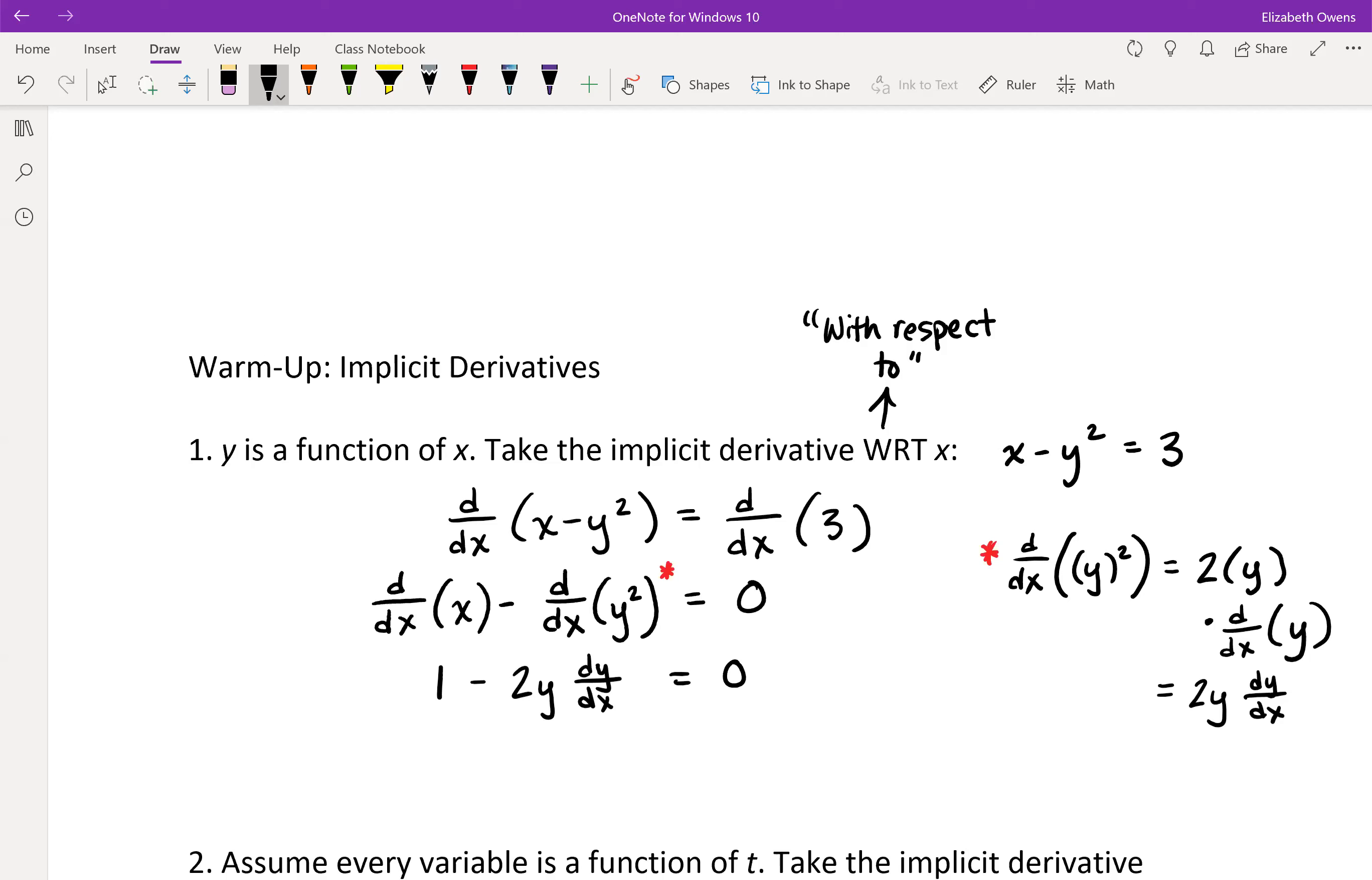And then to really solve for the derivative itself, we'll solve for dy dx. Just to finish it out here. And so we would have 2y dy dx equals one, if you add that over to the other side, then kind of spin the equation around. So we'd end up with dy dx equals one over two y. And that would be our implicit derivative.